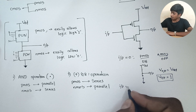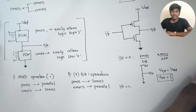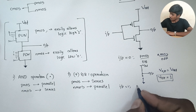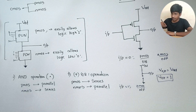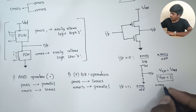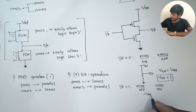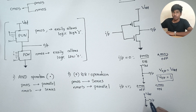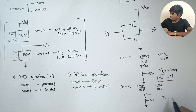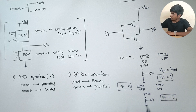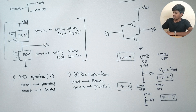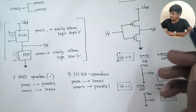When input is 1 — logic high — PMOS will be in the OFF state, and NMOS will be in the ON state. PMOS is open circuited, so VDD is disconnected from output. NMOS is ON, so output is connected to ground. Hence output will be equal to logic 0. So for input 1, output is 0, and for input 0, output is 1. Hence the CMOS circuit, which is a combination of PMOS and NMOS, is used as an inverter.